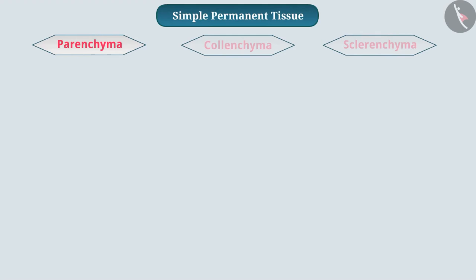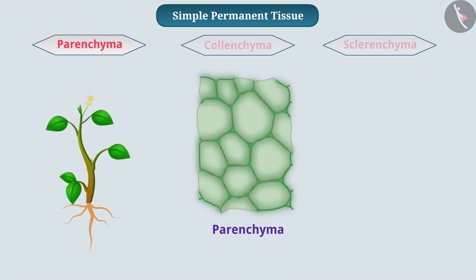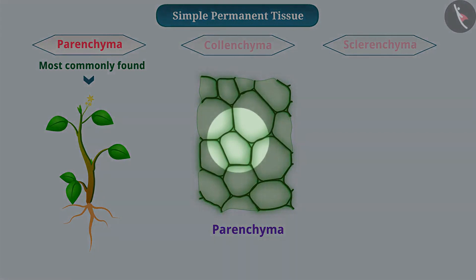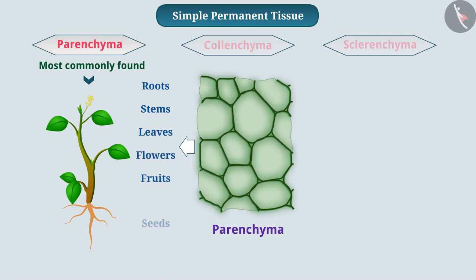Some layers of cells form the basic packing tissue called parenchyma. In plants, parenchyma is the most commonly found simple permanent tissue. This tissue is made up of living cells and have thin cell walls. These cells are often loosely packed and have free spaces between them. Parenchyma is found in almost all plant parts — for example, roots, stems, leaves, flowers, fruits, and seeds.